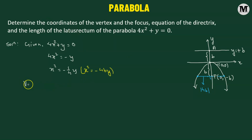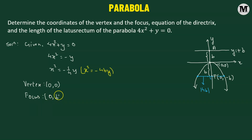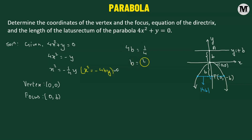Now we have all the information we need. The coordinates of the vertex are (0, 0) by definition. For the focus, which is at (0, negative p), we need to find the value of p. Comparing x squared equals negative one-quarter y with the standard form, we get 4p equals one-quarter, which means p equals one-sixteenth. So the focus is at (0, negative one-sixteenth).